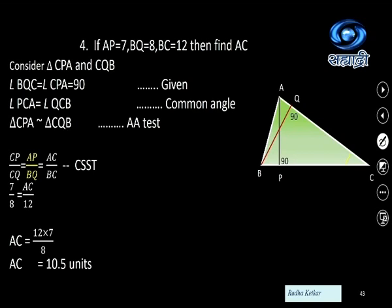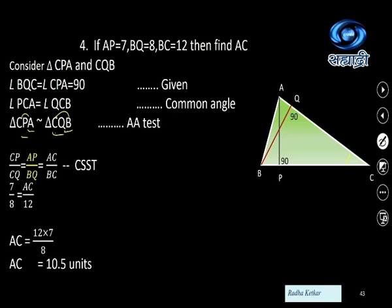Since the triangles are similar, corresponding sides are in proportion: CP upon CQ equals AP upon BQ equals AC upon BC. Substituting known values — AP = 7, BQ = 8, BC = 12 — we get AC upon 12 equals 7 upon 8. Solving: AC = 12 × 7 ÷ 8 = 10.5 units. Once similarity is proved, we can find the missing side.